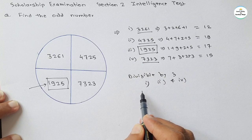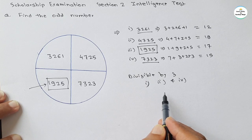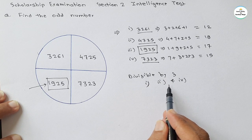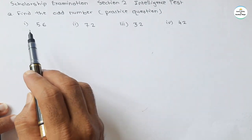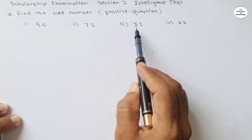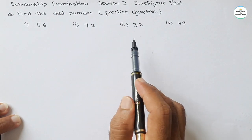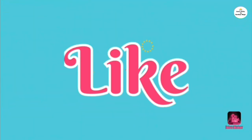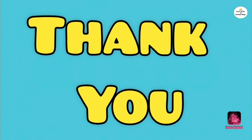This is the solution for this question. Now as usual there is a practice question for you — try to answer in the comment section and I will give the solution in the next upcoming video. See this practice question: four numbers are given and one number is odd. The numbers are 56, 72, 32, and 42. Try to find the sum relation which is common for three numbers — one number is odd. Write your answer in the comment section. We will meet again in the next video. Do learn, do enjoy — thank you!